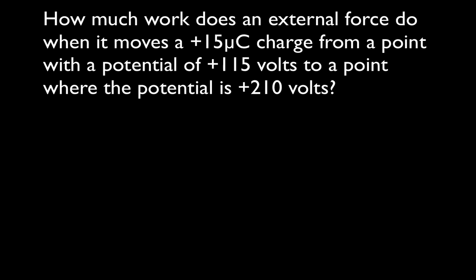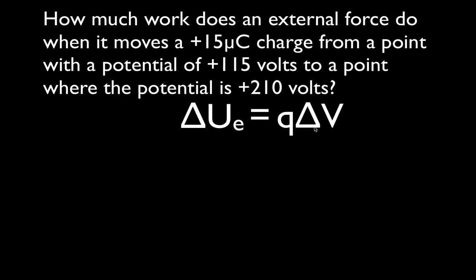If you're taking AP physics, this equation is on your AP physics equation sheet. The equation says that the change in potential energy is equal to the amount of charge times the potential difference through which that charge is moved — delta V is the change in potential. We're asked to calculate work, and that's okay because the change in potential energy is equal to the amount of work. When you change the potential energy between two charges, you do work. When you do work on charges, you change their potential energy.